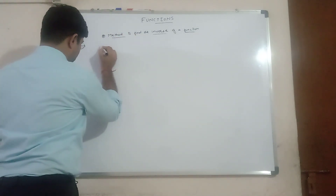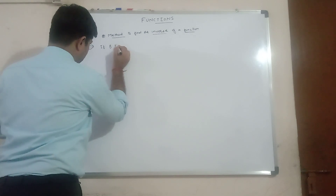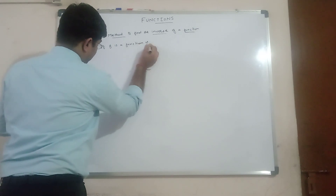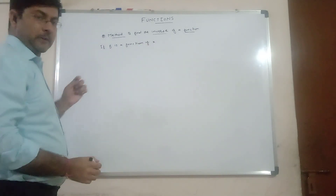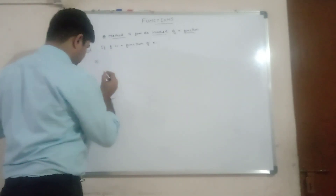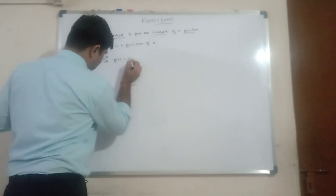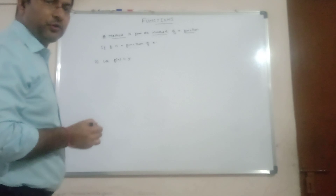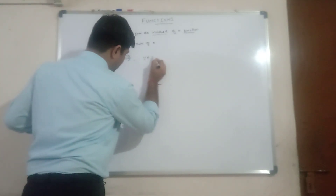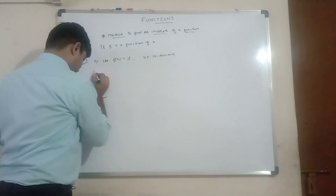Suppose f is a function of x. We will follow certain steps. Step 1: let f(x) = y, where y belongs to the co-domain. Put f(x) = y for y belongs to co-domain.